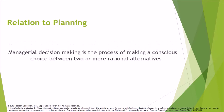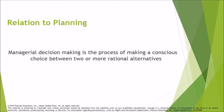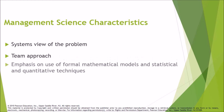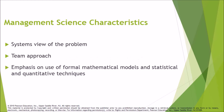Relation to planning: Managerial decision-making is the process of making a conscious choice between two or more rational alternatives. Management science characteristics include a systems view of the problem, a team approach, and emphasis on the use of formal mathematical models and statistical and quantitative techniques.